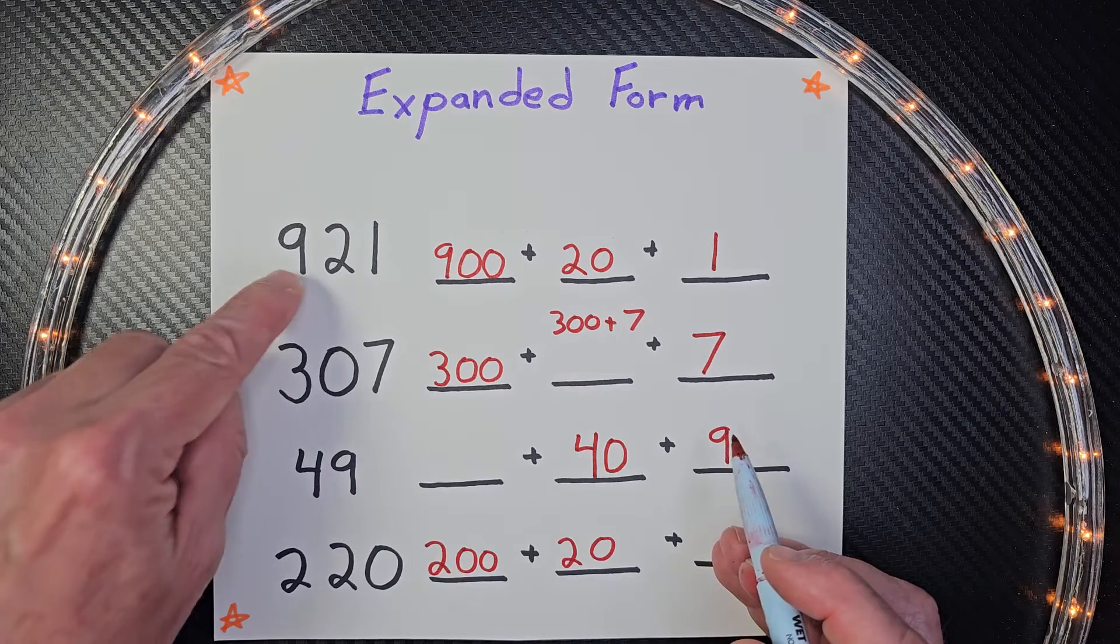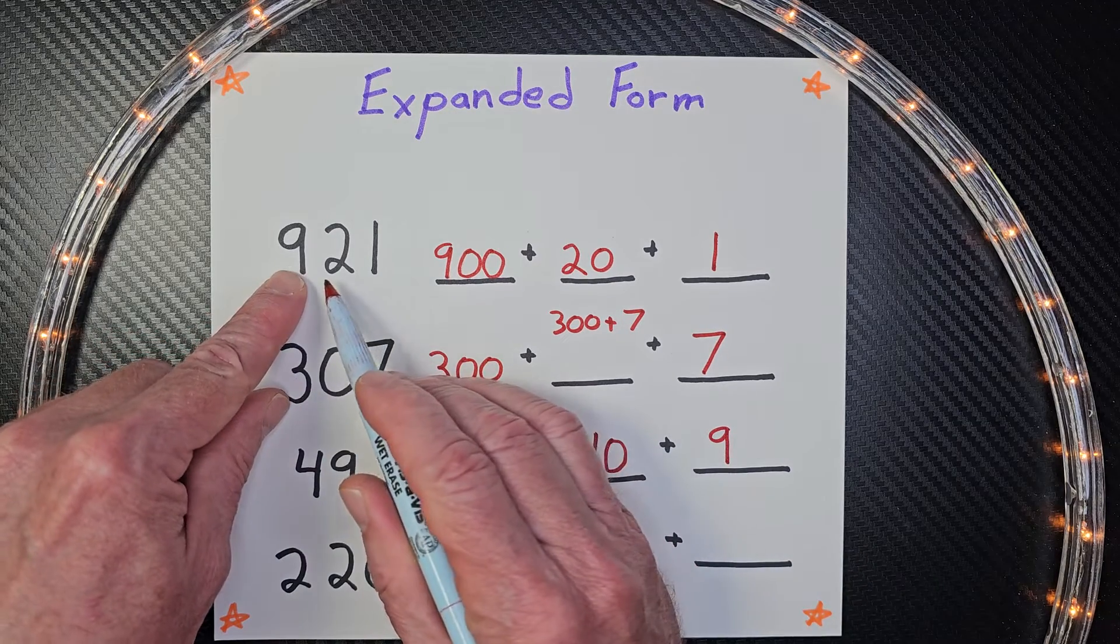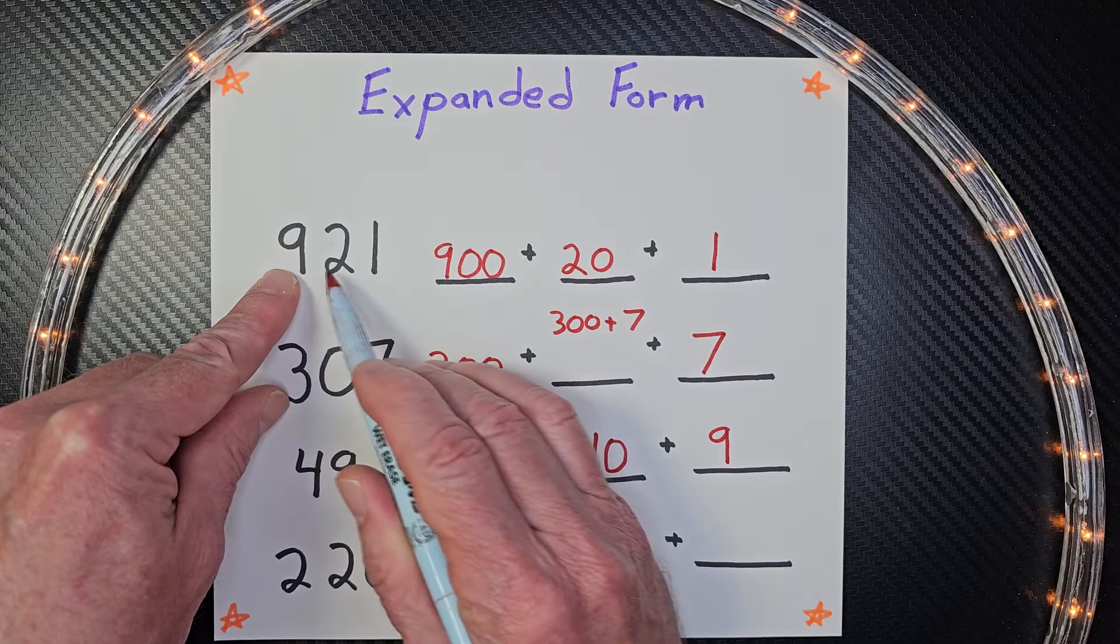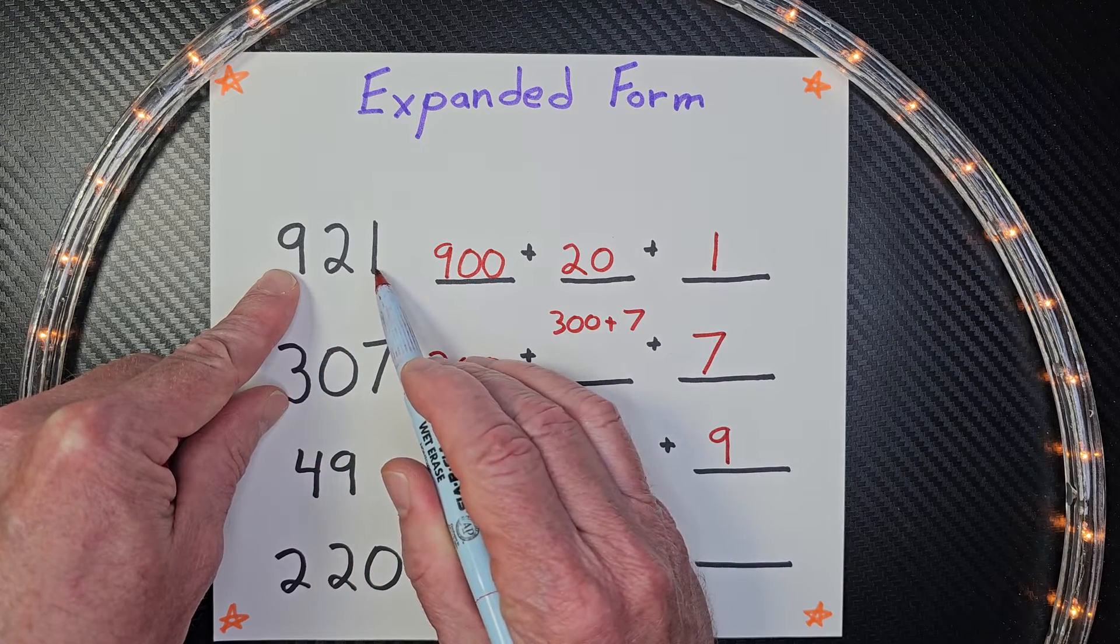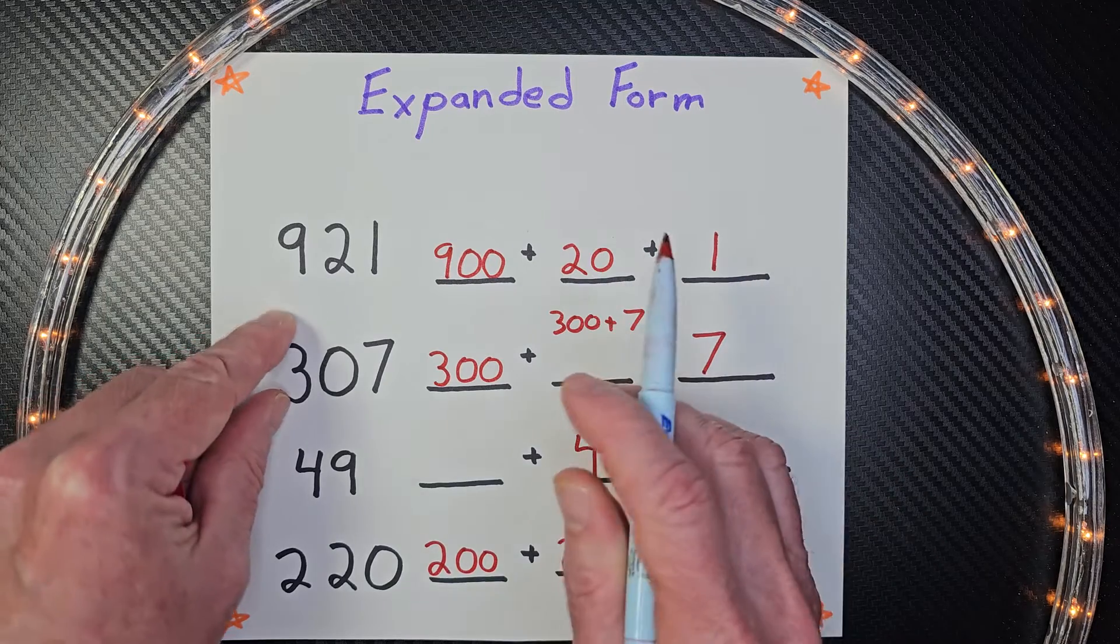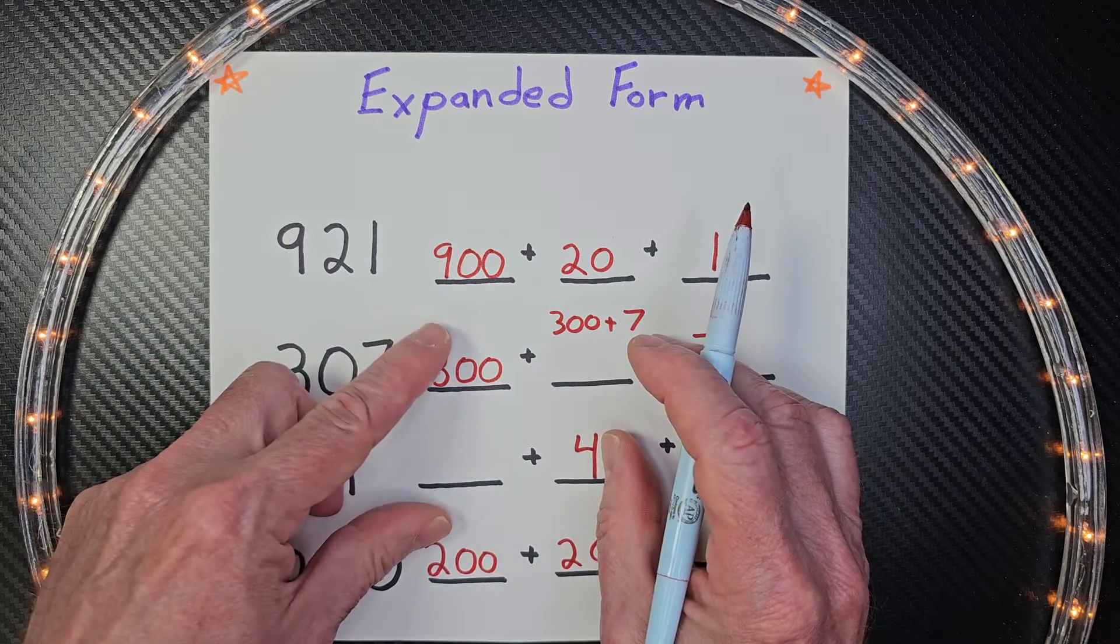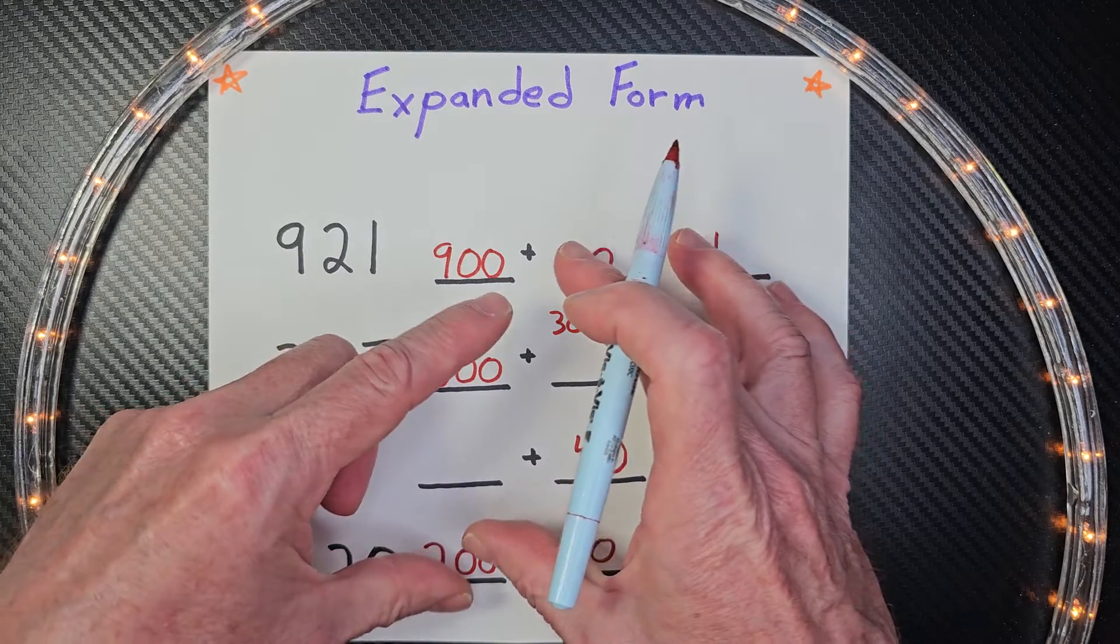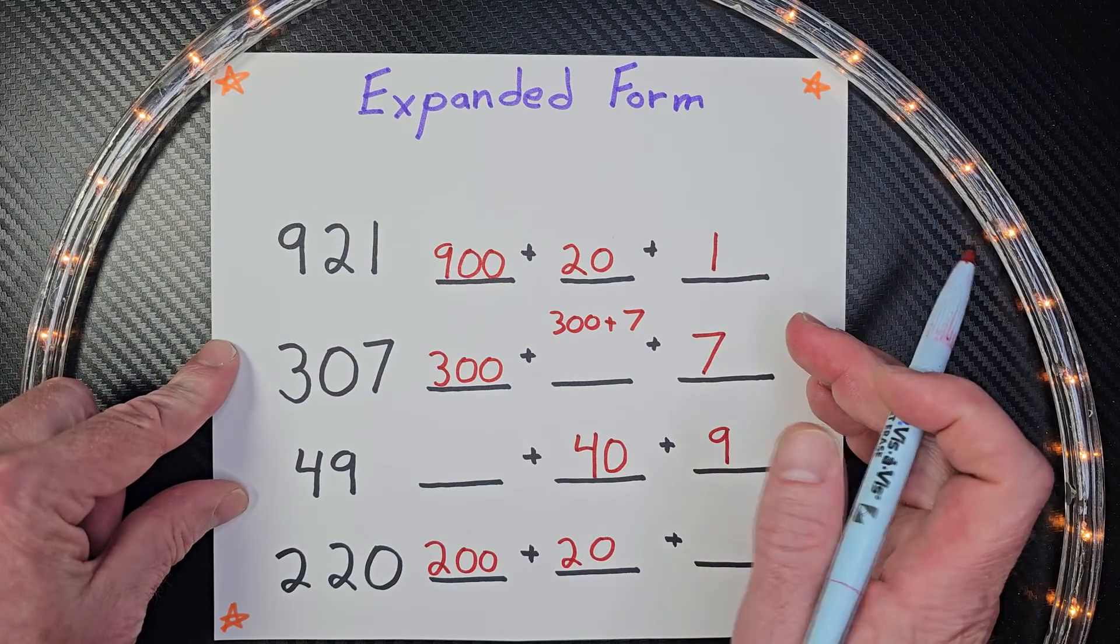So, for instance, let's go back up here and review how we would say this. 921. We wrote it in expanded form. And so we expanded the numbers out to show the value of each digit.